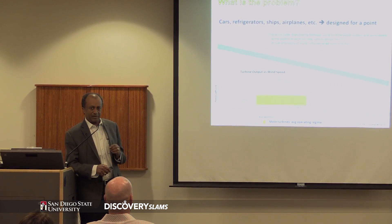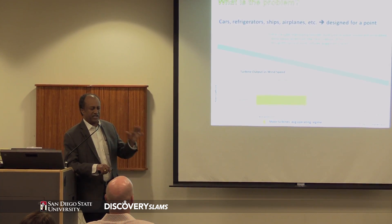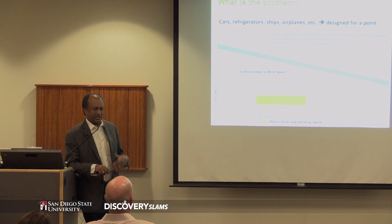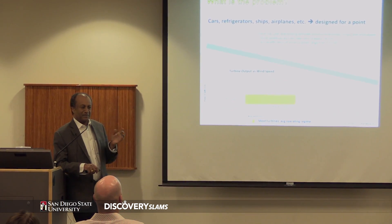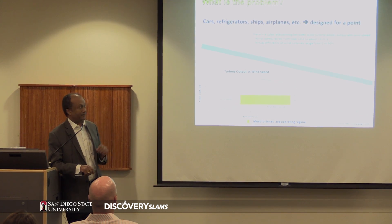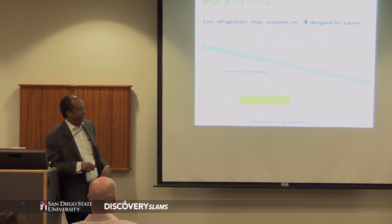And what is the problem? There are two problems with wind — not necessarily that they kill birds or tend to be noisy, or that some people just don't like the looks. But from an engineering point of view, there are two major problems: one is efficiency, two is capacity. And they are tight.